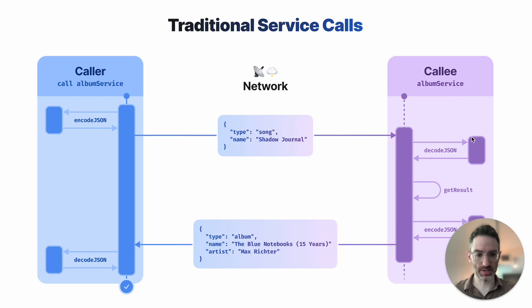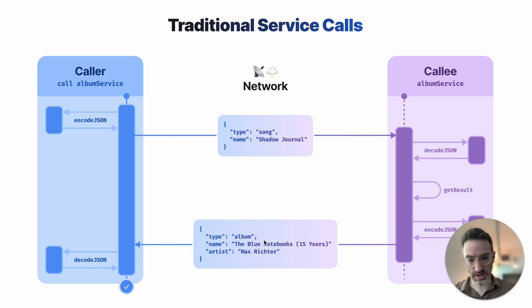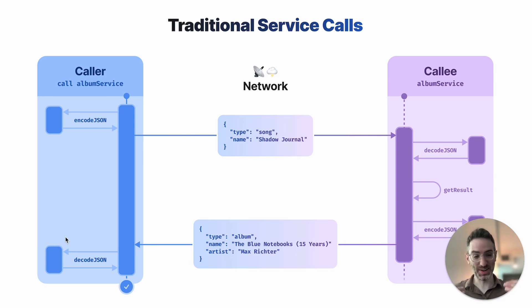The callee is going to need to decode that argument, run the service logic, get the result, encode the result, and send that back over the network. And finally, the caller is going to decode the result and have its answer.